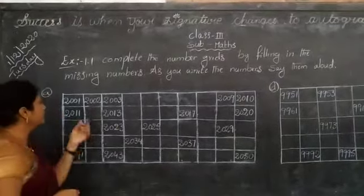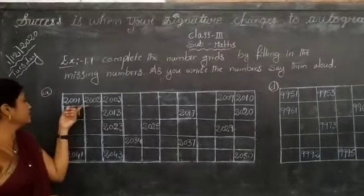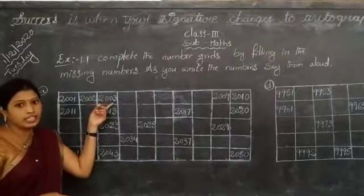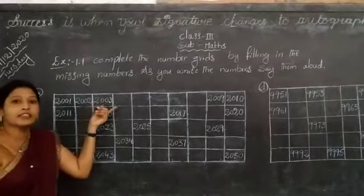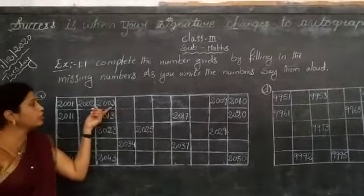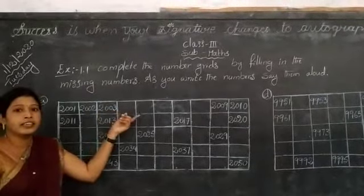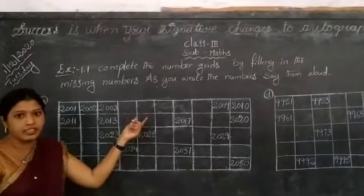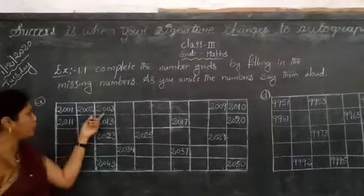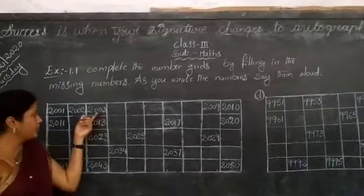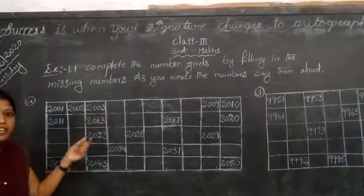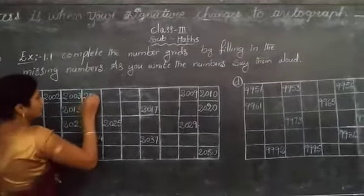Next, see the numbers they have given: 2001, 2002, 2003. So these numbers are in sequence order. We should follow this sequence and fill the boxes with the corresponding sequence. So what is the number after 2003? 2004.